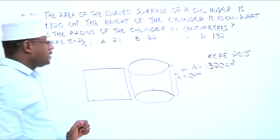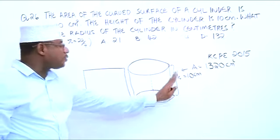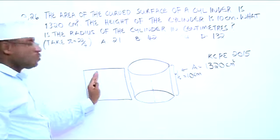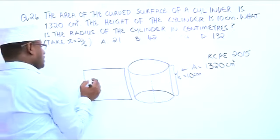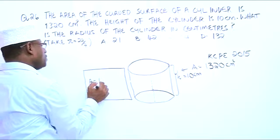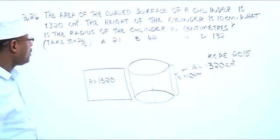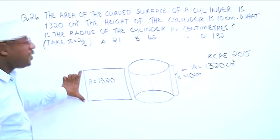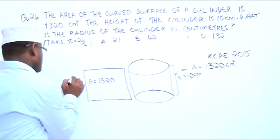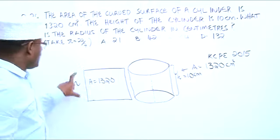We are told that the area of the curved surface, which when we cut and stretch it becomes a rectangle, is 1320. This side we already have, which is the height.